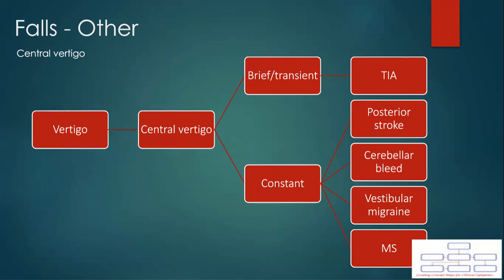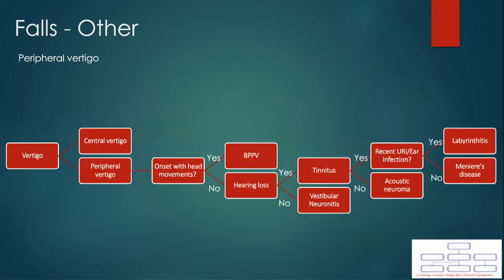Vertigo can be another cause for falls. It can be classified as central or peripheral on the basis of vestibular symptom pathology. Vestibular symptoms originating from pathology in the cerebellum or brainstem are classified as central type. Central vertigo can either present as brief or transient or constant. Conversely, symptoms arising from the inner ear or from the vestibular nerve are classified as peripheral, as shown in this slide.